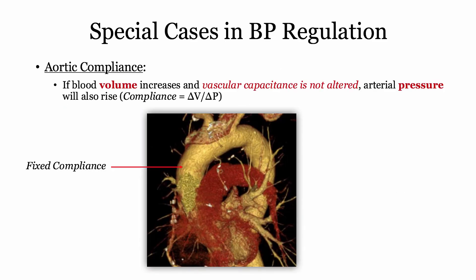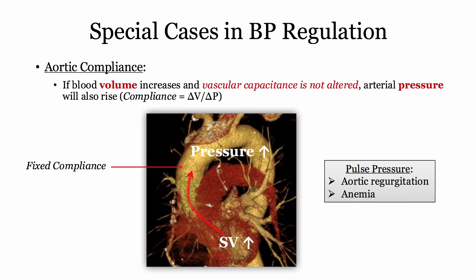The third scenario involves aortic compliance and blood pressure. Here is the rule: if the blood volume increases and vascular capacitance is not altered, arterial pressure must rise. This concept shows up in aortic regurgitation and chronic anemia — both associated with an increase in stroke volume, and the higher volume translates into a widened pulse pressure.